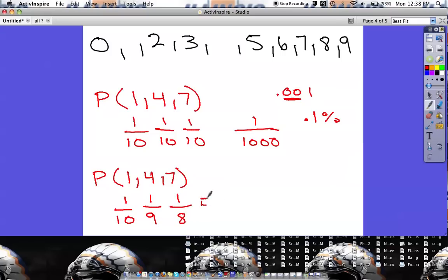So now I just have to do the math for this. One times one times one is one. Let's see. 10 times nine is going to be 90. 90 times eight, well, nine times eight is 72. So 90 times eight is going to be 720.